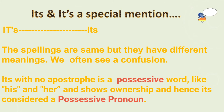Now we will proceed with the pronoun 'its'. We have two 'its': one is with an apostrophe and one is without an apostrophe, which is a possessive pronoun. The spellings are the same but they have different meanings. We often see a confusion, so to give you clarity between these two, I am giving a few examples.